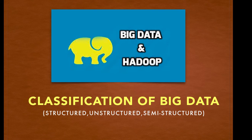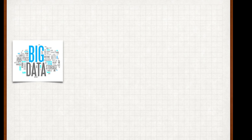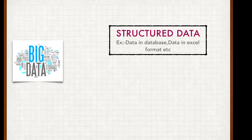Now we're going to talk about the classification of big data. When we talk about classification of big data, we are basically talking about structured, unstructured, and semi-structured data. Big data can be classified into three parts. The first classification is structured data, which contains neat, tight information that is easy to process and execute. Structured data has some format associated with it.